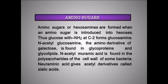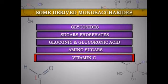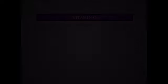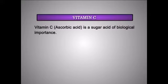Neuraminic acid gives acetyl derivatives called sialic acids. These are constituents of some glycoproteins in bone and connective tissues and glycolipids of the nervous system. Vitamin C, that is ascorbic acid, is a sugar acid of biological importance.